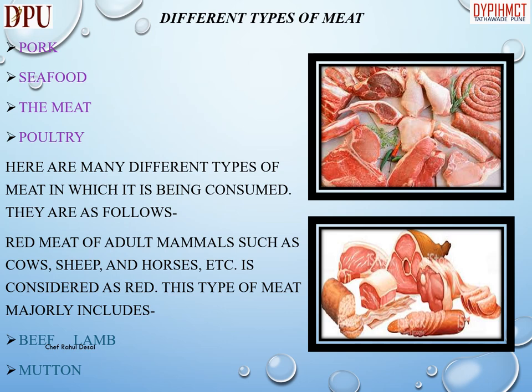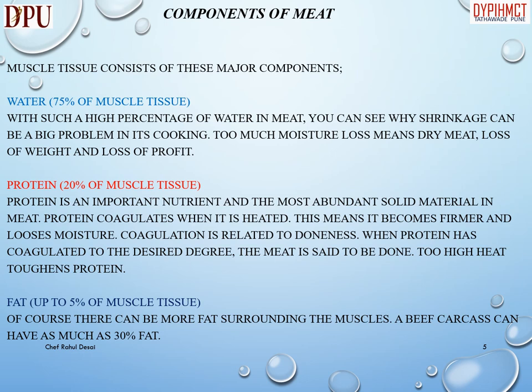Different types of meat include pork, seafood, poultry, and many others. The meat of adult mammals such as cows, sheep, and horses is considered red. This type of meat majorly includes beef, lamb, and mutton.